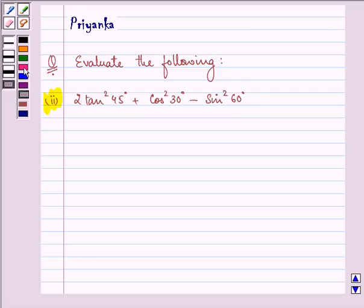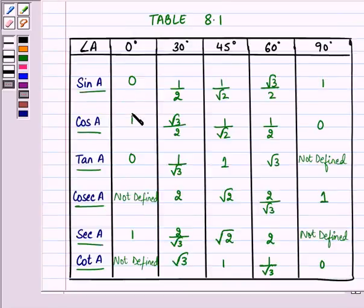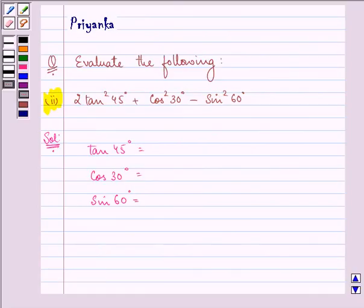So here in this question we should be knowing the values of tan 45 degrees, cos 30 degree, and sin 60 degree. These values will be taken up from table 8.1. Here we have tan 45 degree as 1, cos 30 degree as root 3 by 2, and sin 60 degree again as root 3 by 2.